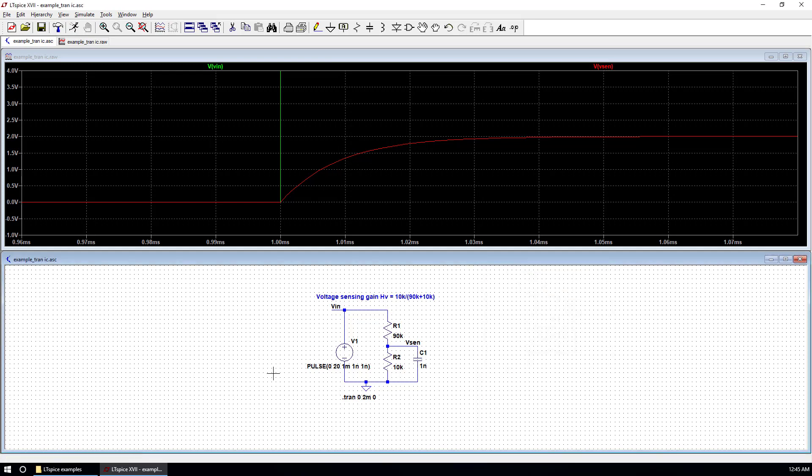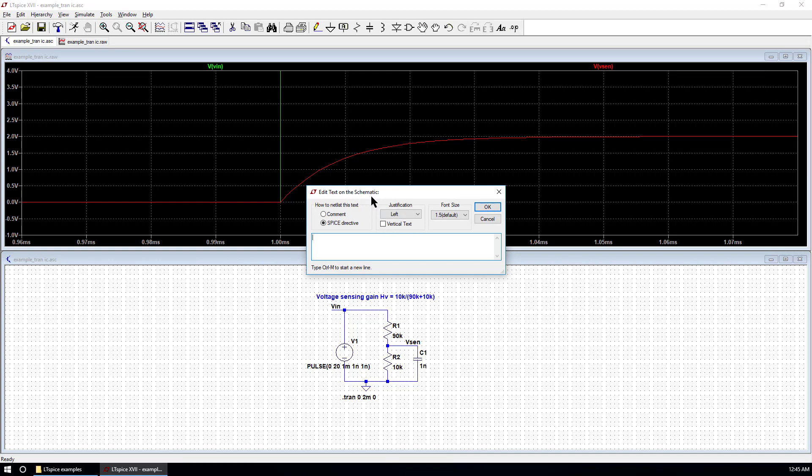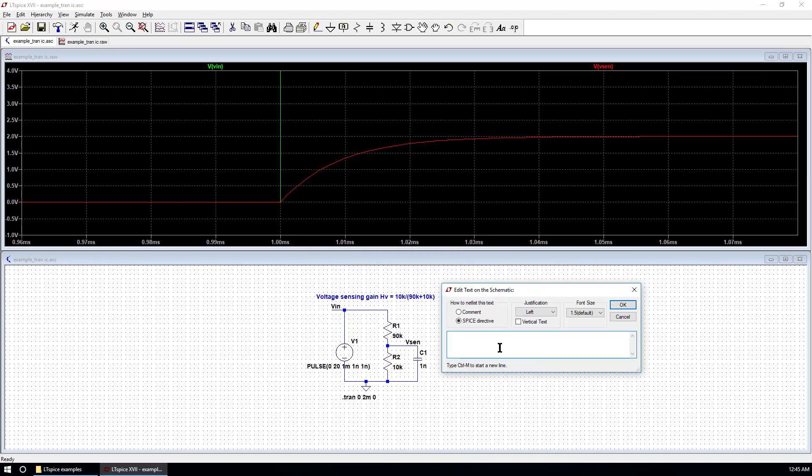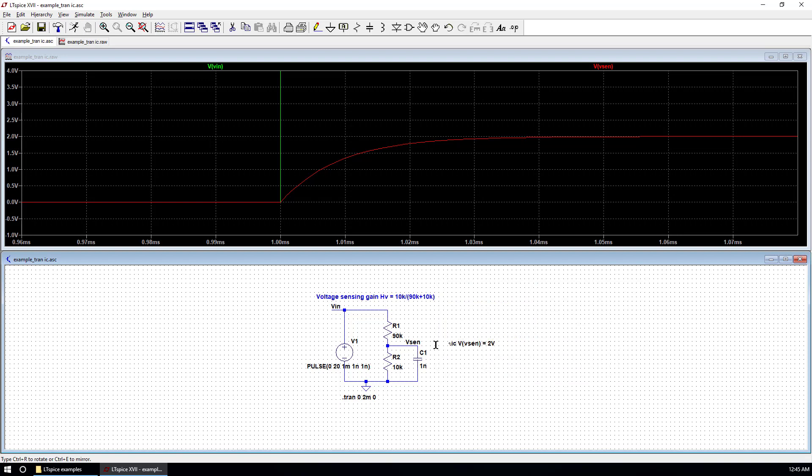Next, we want to add the initial condition. You can put a SPICE directive by clicking .op. So the syntax is just starting with a dot IC V represents the voltage over V sense. V_SEN, that's the net name at this point, equals to 2 volts. You can put it here. So this is the syntax to define the initial condition.